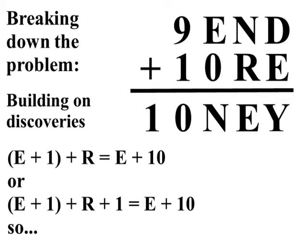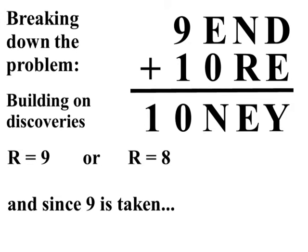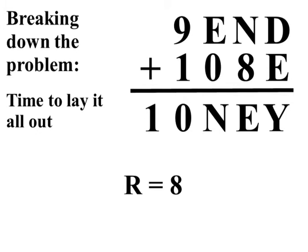Even better, we can simplify these two equations by subtracting E from both sides, giving us R equals 9 or R equals 8. And since 9 is taken, R equals 8.